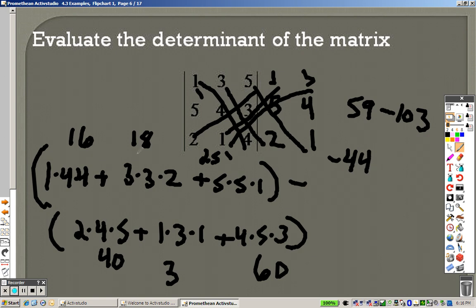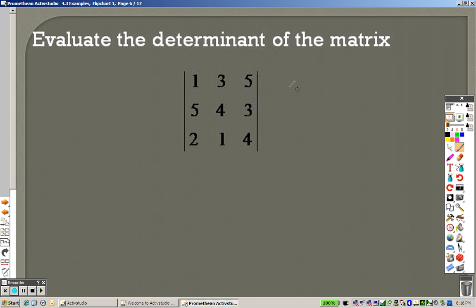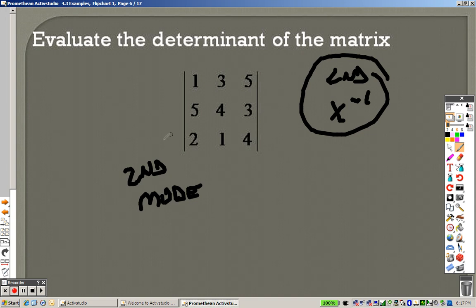Once again, that took a long time. Quickly, to show you what to do, go to 2nd, X⁻¹. That's to the matrix. Go the whole way over to edit. And let's just write over B again. B is a 3 by 3 matrix. So, 1, enter, 3, enter, 5, enter, 5, enter, 4, enter, 3, enter, 2, enter, 1, enter, 4, enter. And then, press 2nd and mode. That takes you back to the original screen. Now that you're back there, press this again. And go over to math, and press enter on determinant. Press this again. And go down to B, and press enter, and notice how you get negative 44 again.